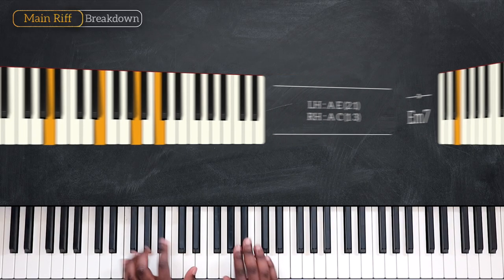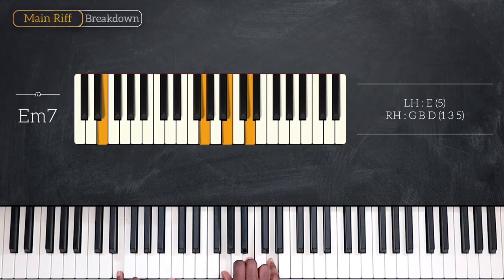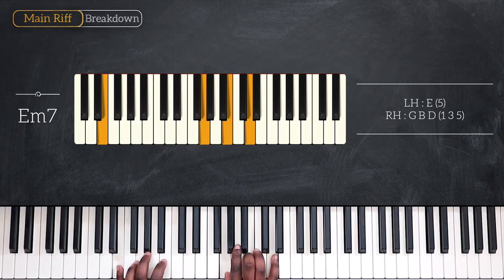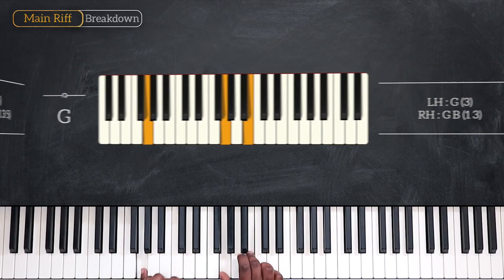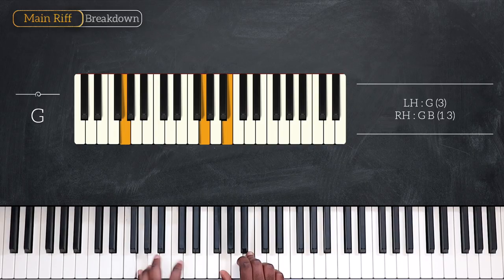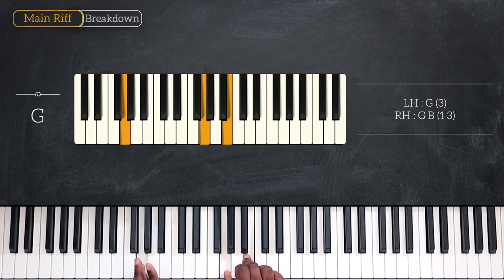Then we have E minor 7. E on your left, G, B and D. Going up on G, playing G, G and B. And that's the chords we're going to use for the first part of the main riff.